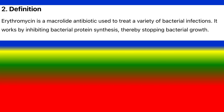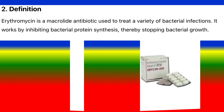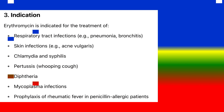Definition: Erythromycin is a macrolide antibiotic used to treat a variety of bacterial infections. It works by inhibiting bacterial protein synthesis, thereby stopping bacterial growth.